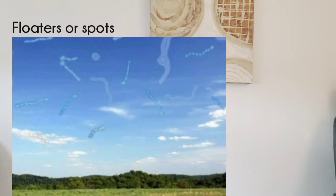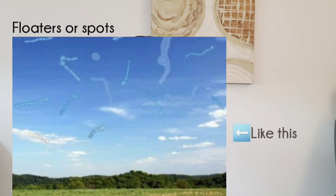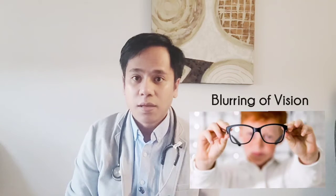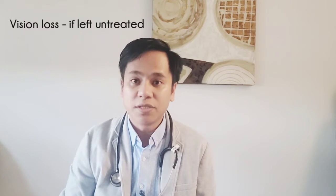What are the common signs and symptoms? There are many symptoms, but the common ones are floaters — you might see white spots in your eyes — blurry vision, and if left untreated, it can lead to the worst state of vision loss.